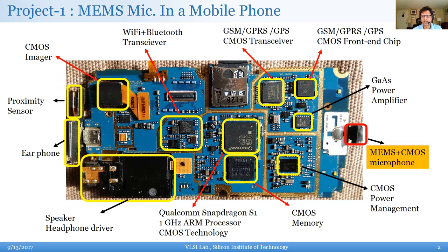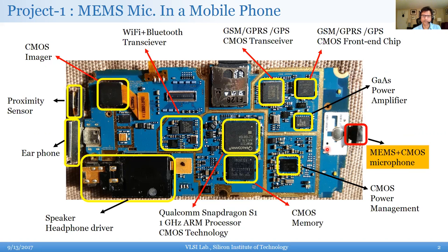The first project will be the MEMS microphone preamplifier for mobile phones. I showed you different parts of the cell phone, and if you look at the right-hand side, there's a small black object sticking out — that's essentially the MEMS microphone along with the preamplifier. The preamplifier is connected inside the phone, amplifies your voice, and sends it over the network. I'll go step by step through the noise and distortion specifications.